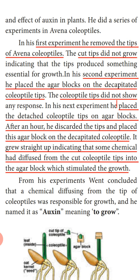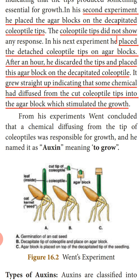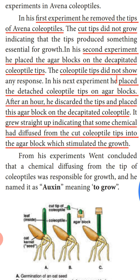In his first experiment, he removed the tip of the Avena coleoptile. Diagram A represents the germination of an oat seed — a monocot seed — with a coleoptile growing there. In diagram B, the tip of the coleoptile is removed — decapitated. He observed that the cut tips did not grow, indicating that the tips produce something essential for growth. So he concluded that some substance is produced in the tip which promotes growth in the plant.